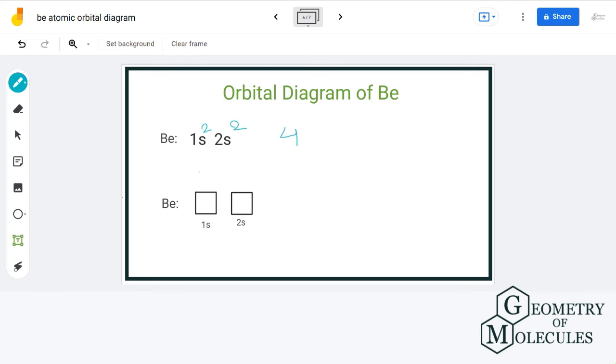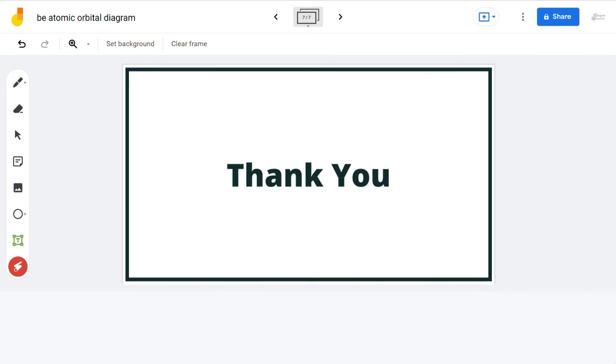Now let us arrange the electrons in an orbital. s can hold maximum of two electrons, so we will place two electrons with opposite spin. The same we will do with 2s. Now there you have it. This is the orbital diagram of beryllium.